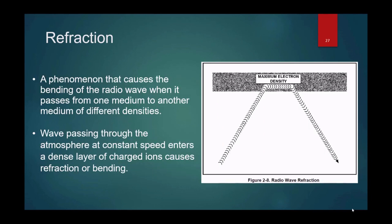Refraction is the phenomenon that causes bending of the radio wave when it passes from one medium to another medium of different densities. You could probably guess, what is this medium that's going to have different density? That is the layers of the ionosphere. They have different densities. A wave passing through the atmosphere at constant speed enters a dense layer of charged ions, one of those layers in the ionosphere, which causes refraction or bending.